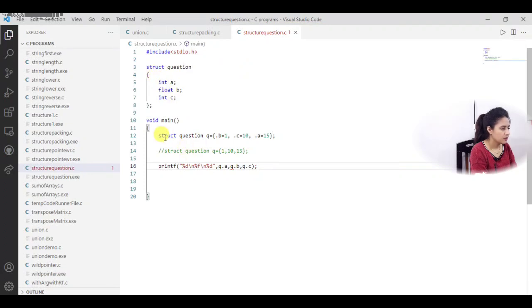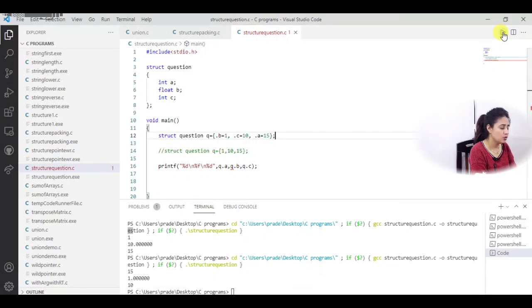So see this is the question. We have just done this designated initialization in this question. Right. Same we have discussed in that example. Right. On the whiteboard. Now, let me just save it and run it and see what output you will get here. See the 15, 1.0, because it is float and 10.